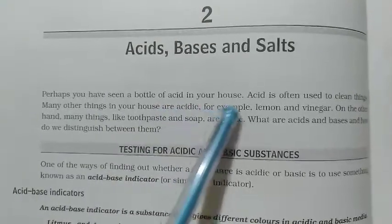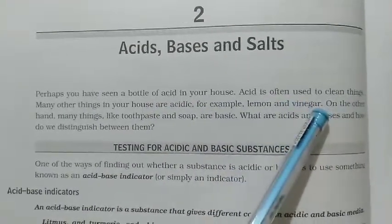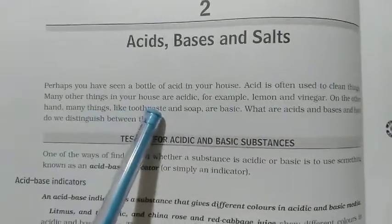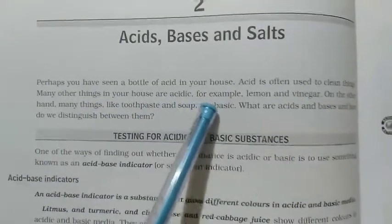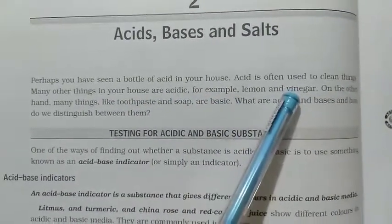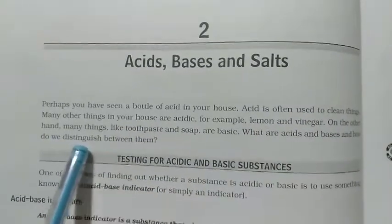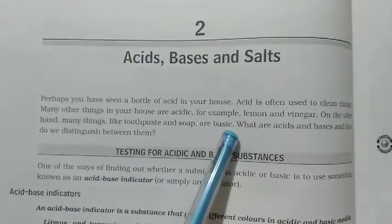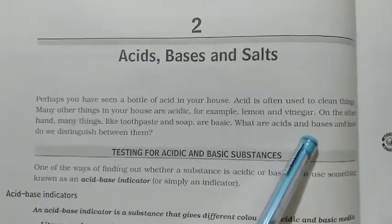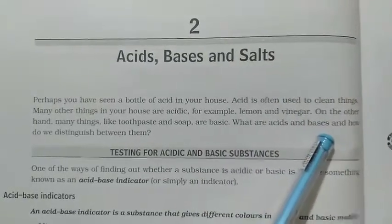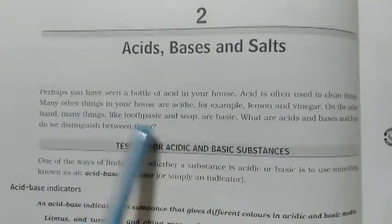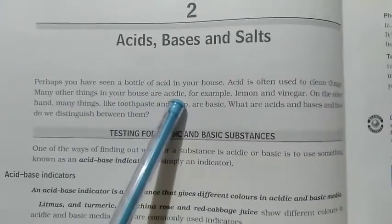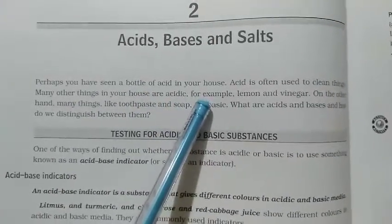Perhaps you have seen a bottle of acid in your house. Acid is often used to clean things. Many other things in your house are acidic — for example lemon and vinegar. On the other hand, many things like toothpaste and soap are bases. What are acids and bases and how do we distinguish between them?